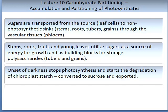Stems, roots, fruits and young leaves utilize sugar as a source of energy for growth and as a building block for storage polysaccharides. Polysaccharides means many sugars. The onset of darkness stops photosynthesis in C3 and C4 plants and starts the degradation of chloroplast starch — that is, its conversion to sucrose — and once converted to sucrose, it can be exported.